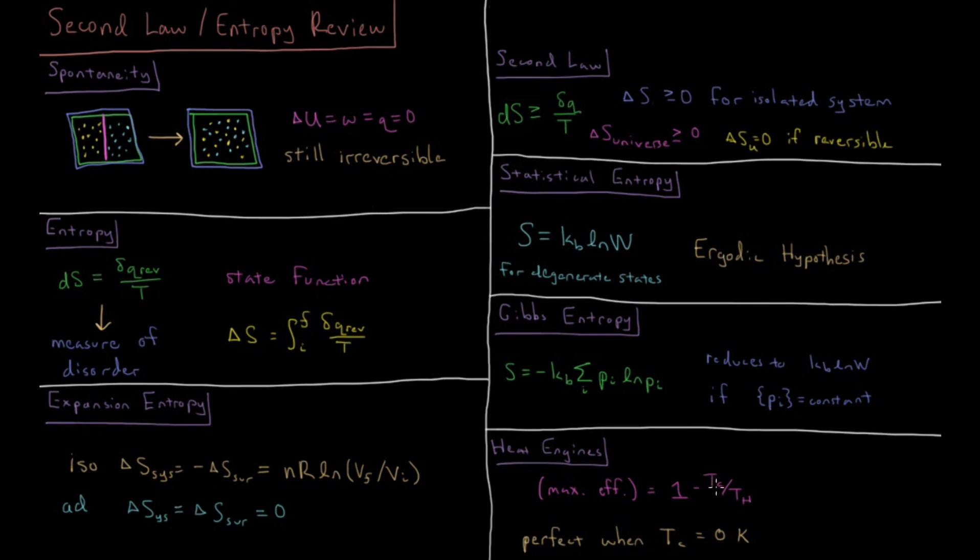So a heat engine can only achieve perfect efficiency when the temperature of the cold reservoir is equal to 0 Kelvin which cannot be achieved in practice.